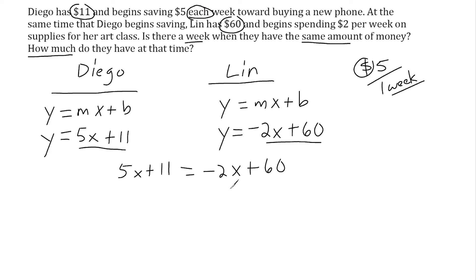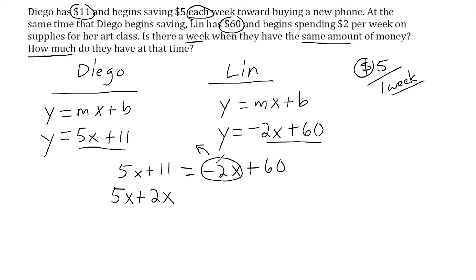We want all terms with a variable and coefficient on the left side of the equal sign and all constants on the right side. We rewrite 5x on the left, then move the negative 2x term to the other side by writing its opposite, plus 2x. We keep the positive 60 on the right side, and move the positive 11 to the right side by writing minus 11.